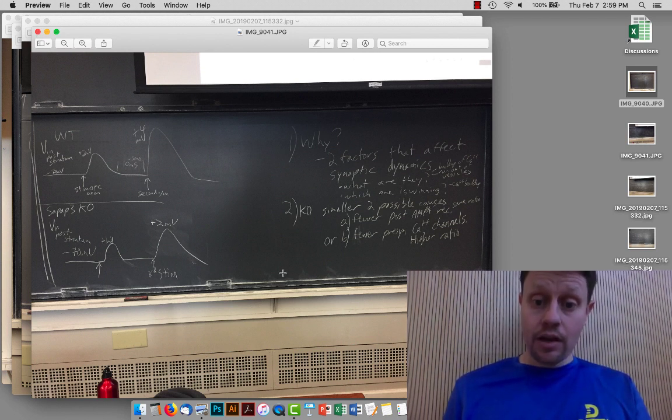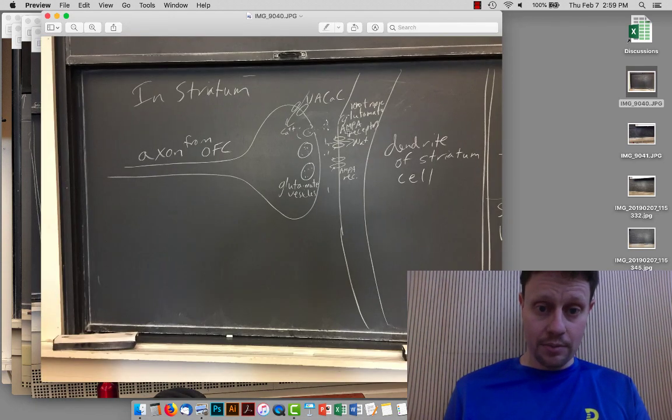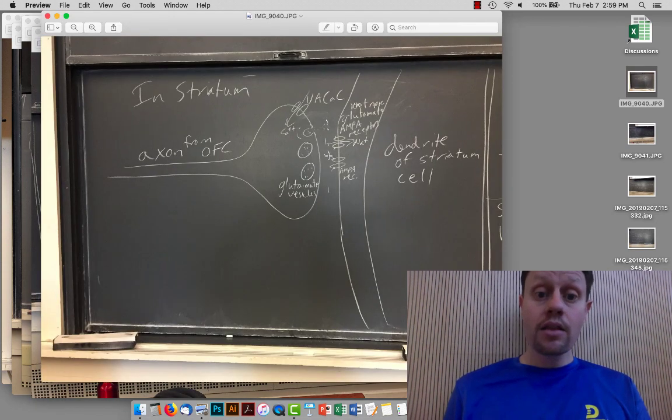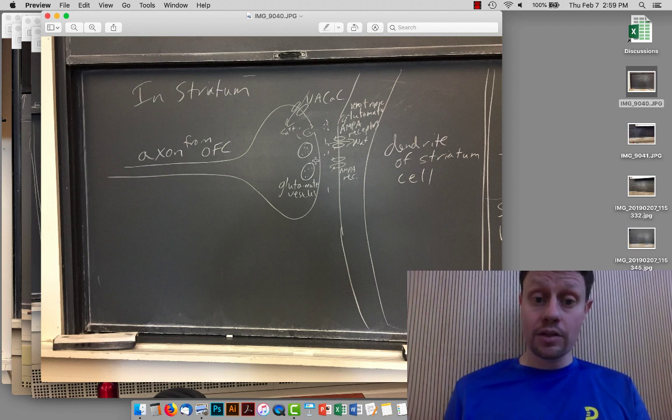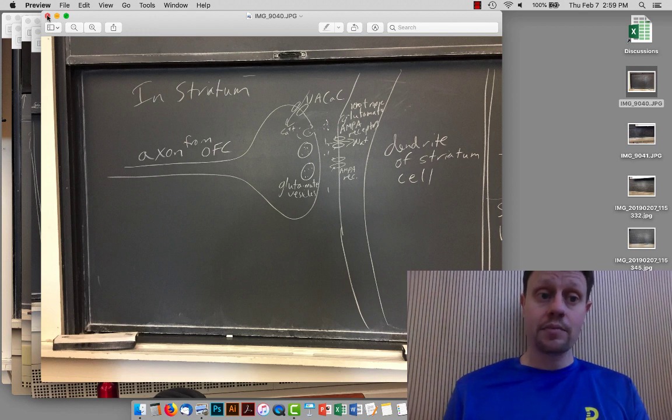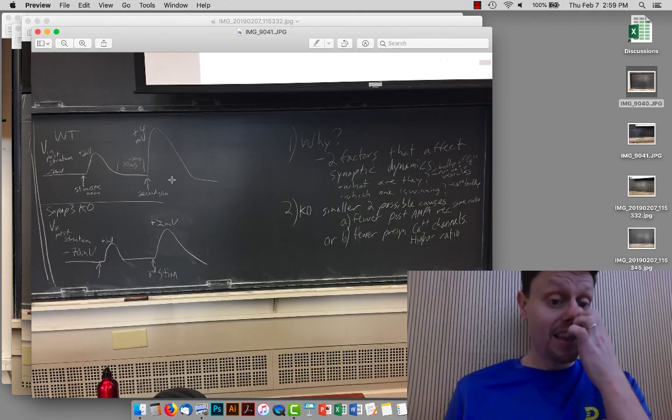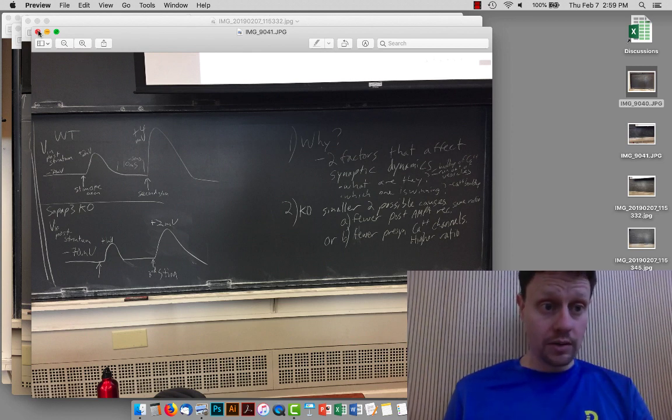Conversely, if the change is postsynaptic in the number of AMPA receptors, then the presynaptic terminal is still going to release the same amount the first time, and release twice as much, in this case, the second time. When they did the experiment, they found that the ratio of the two is the same.